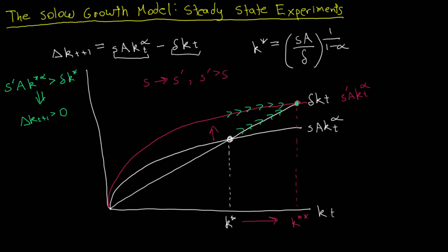Similarly, if the savings rate decreases, the investment curve shifts downward, leading to a lower new steady state — call it K triple star. In this case, depreciation outpaces investment at the old steady state, so capital shrinks. But eventually investment catches up and we converge to the lower new steady state.